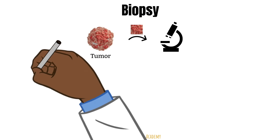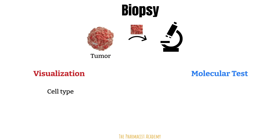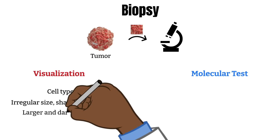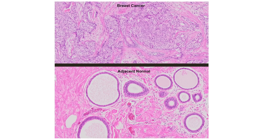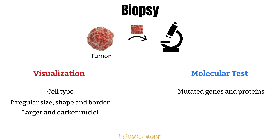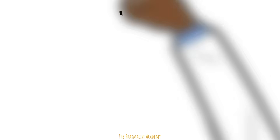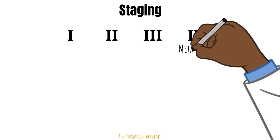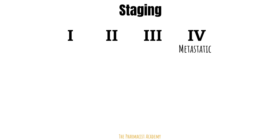The study will allow them to see how these cells look and what markers they express. The type of cell is important as it helps confirm where the cancer originated from. Cancer cells usually have an irregular size and shape and a larger and darker nuclei. You can see the cancer cells are not organized, very messy, and have no borders. The molecular test provides information about any mutated genes and proteins. Once cancer is confirmed, the patient is staged. Solid tumors are generally staged from 1 to 4, with stage 4 also being known as metastatic — at this point, the cancer has moved from point A to a distant location.